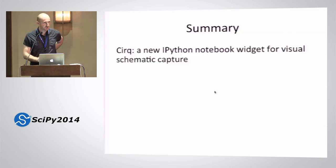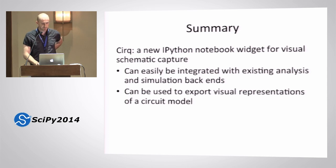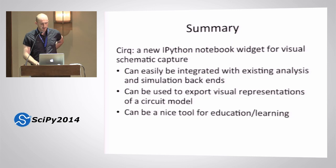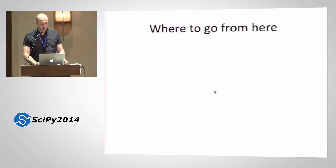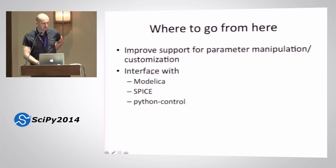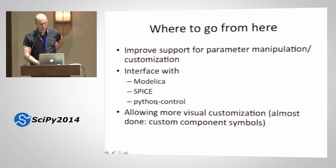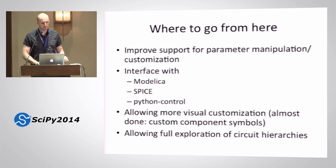In summary, it's a new widget that's, at this point, very lightweight — under 2,000 lines of code of both JavaScript and Python — can very easily be integrated with existing packages, can be used to export SVG representations, and could probably be used in education and learning quite easily. It could also serve as a good example to other people developing more involved graphical widgets that aren't just buttons and pulldowns. From here, I'll probably improve the support for parameter manipulation and customization, provide some interface with some of these packages, make it more easy to customize the visual representation of symbols, and add an up/down hierarchy button where you can zoom into a schematic and look at how some components are built up.